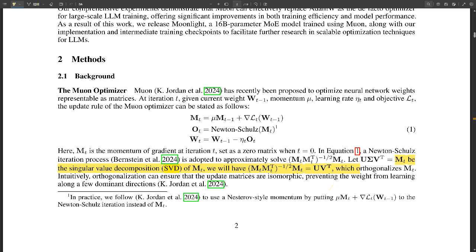So where does Muon fit into all this? Is it like the new challenger? Yeah, exactly. Muon has really shaken things up. It's a brand new optimizer that's really giving AdamW a run for its money. And it all comes down to something called matrix orthogonalization. Now, I know that sounds a little complicated.